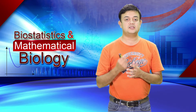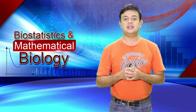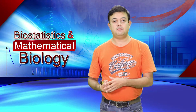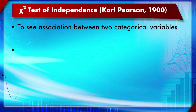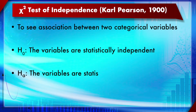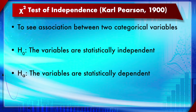The first kind of chi-square test is called the chi-square test of independence, introduced by Karl Pearson in 1900, and is also known as Pearson's chi-square test. This test is used to see the association between two categorical variables. The null hypothesis H0 is that the variables are statistically independent — there is no correlation or association between the two categorical variables.